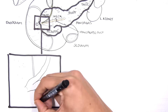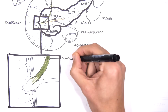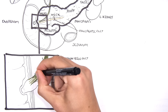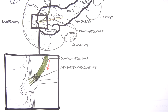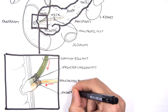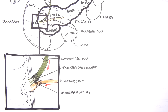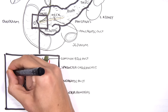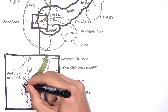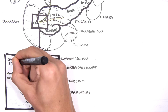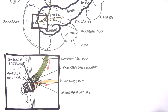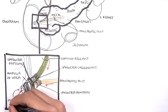The flow of bile is controlled by the sphincter choledochus. Pancreatic juices travel through the pancreatic duct and join with the common bile duct, controlled by the sphincter pancreaticus. The common bile duct and pancreatic duct join to form the ampulla of Vater, which is surrounded by the sphincter papillae. Together, the sphincter papillae, sphincter pancreaticus, and sphincter choledochus make up the sphincter of Oddi.